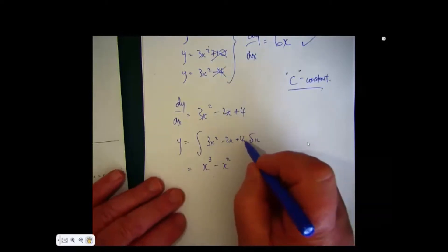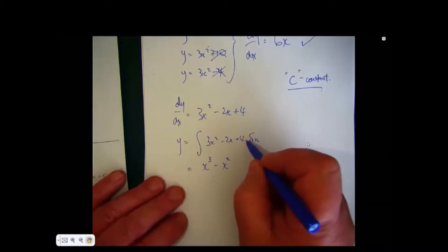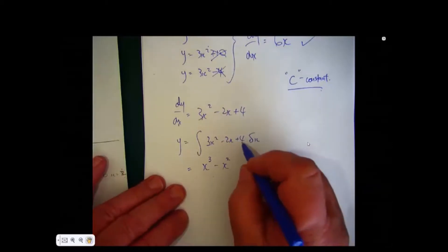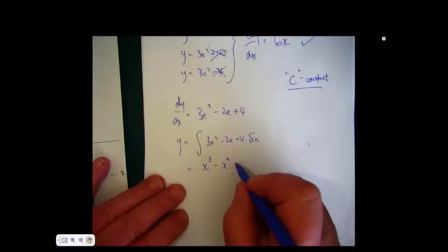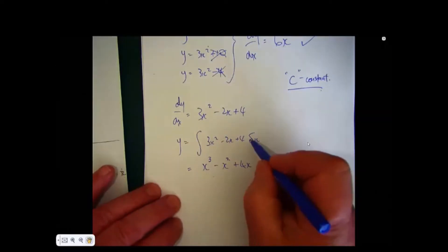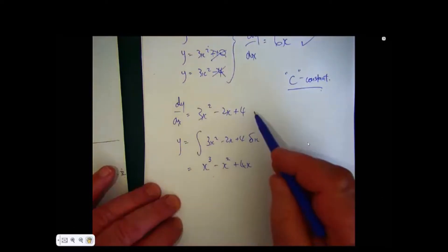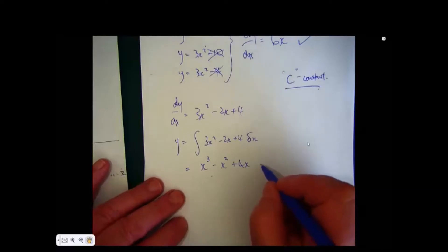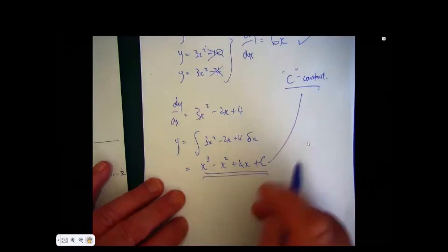Now raise the power by 1. Here this is x to the nought, so raise it by 1 becomes x to the 1, so the constant now becomes 4x. But we're not sure if there are any other constants, because this could in fact refer to a whole series of terms, so what we now do is add our little c. We bring in the constant.